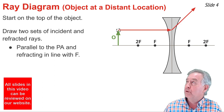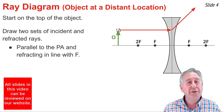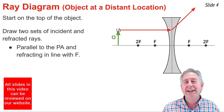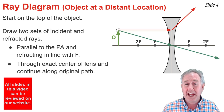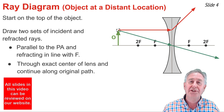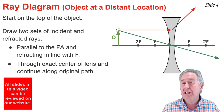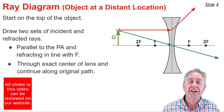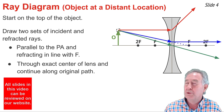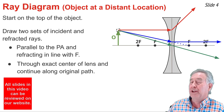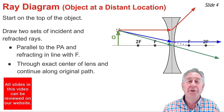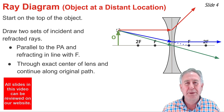A ray of light traveling parallel to the principal axis refracts in line with the focal point. As my second set, I draw a ray of light that travels towards the exact center of the lens and continues along its original path. These are two of the three rules of refraction. You don't need a third set, but if you did, you could draw a ray heading towards the focal point on the opposite side, which refracts parallel to the principal axis.